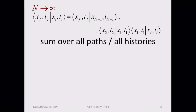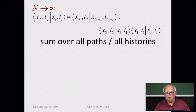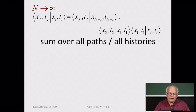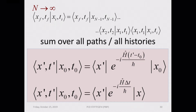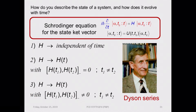Now we are thinking about these alternative paths for a system to go from an initial point x_i at an initial time t_i to a final destination point x_f at a time t_f. We know from conventional quantum mechanics — the Schrödinger-Heisenberg quantum mechanics — that this probability amplitude is given by the time evolution operator, which is e to the minus iHt over ℏ. This is the time evolution operator coming from the solution to the Schrödinger equation.